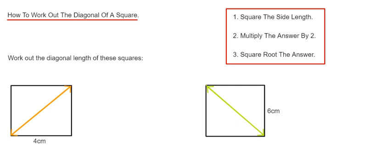The first one has a side length of 4 centimeters. If we square the 4, so 4 squared is 16, we're then going to multiply this by 2, which is 32, and then we're going to square root 32.